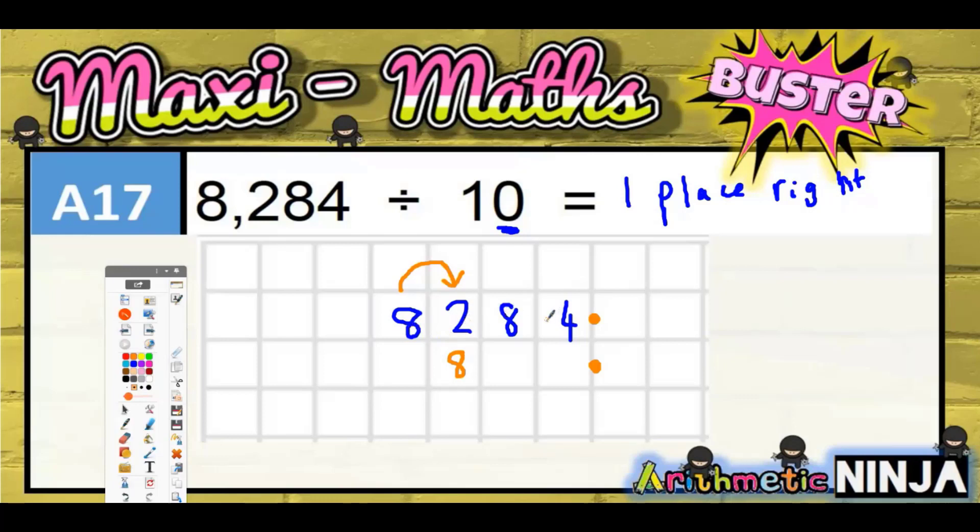So if it goes 8, 2, 8, 4 in the question, it's going to go 8, 2, 8, 4 in the answer. Then as you can see, the twos move one place to the right, eights move one place to the right, the fours move one place to the right.